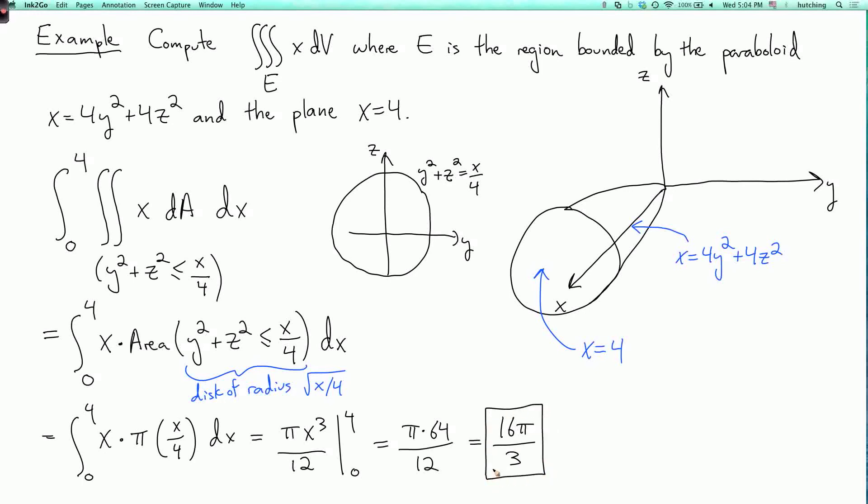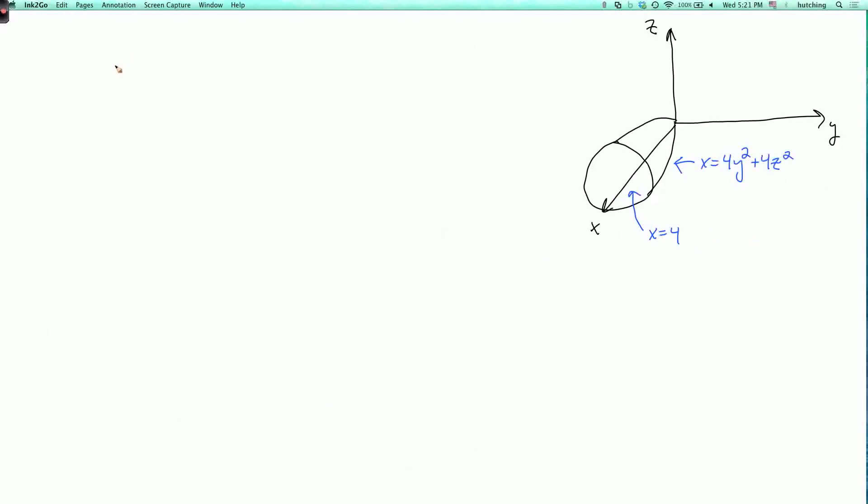Now, we could also evaluate this in other orders. Let's see what this would look like. It's not going to be as nice. So let's try doing this integral in a different order and see what happens. So suppose we want to integrate over x first and then y and then z. So it will be x dx dy dz.